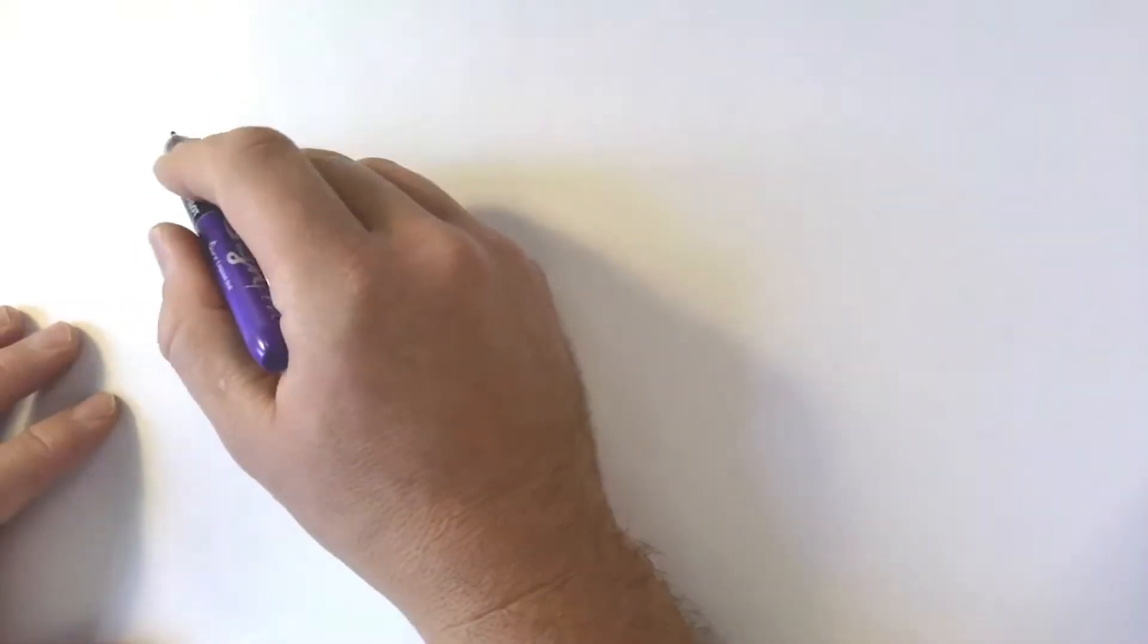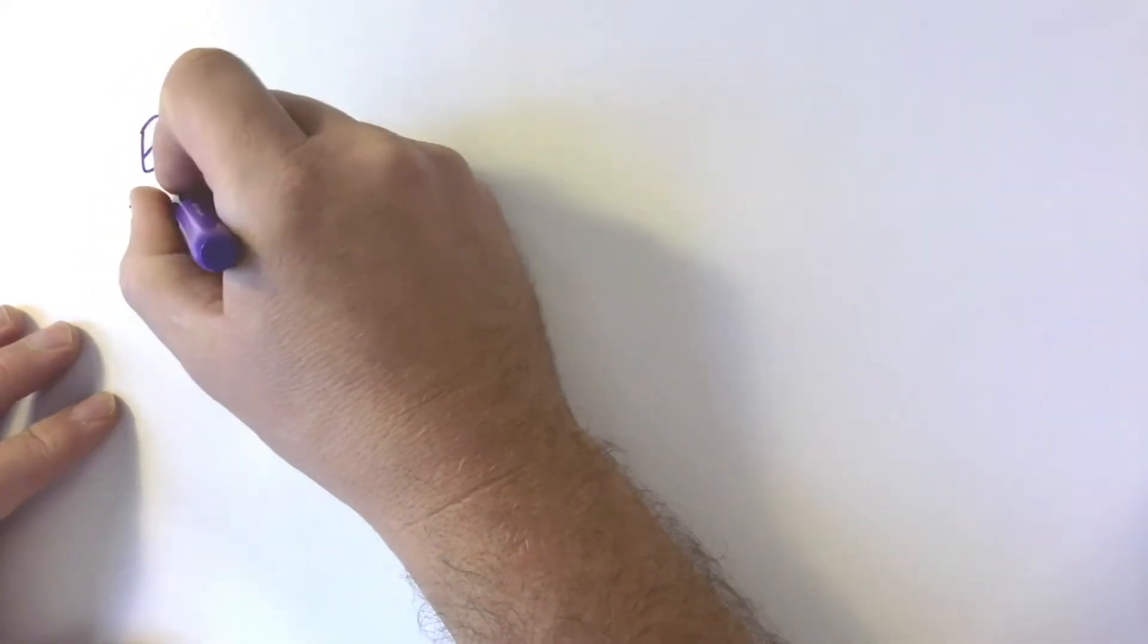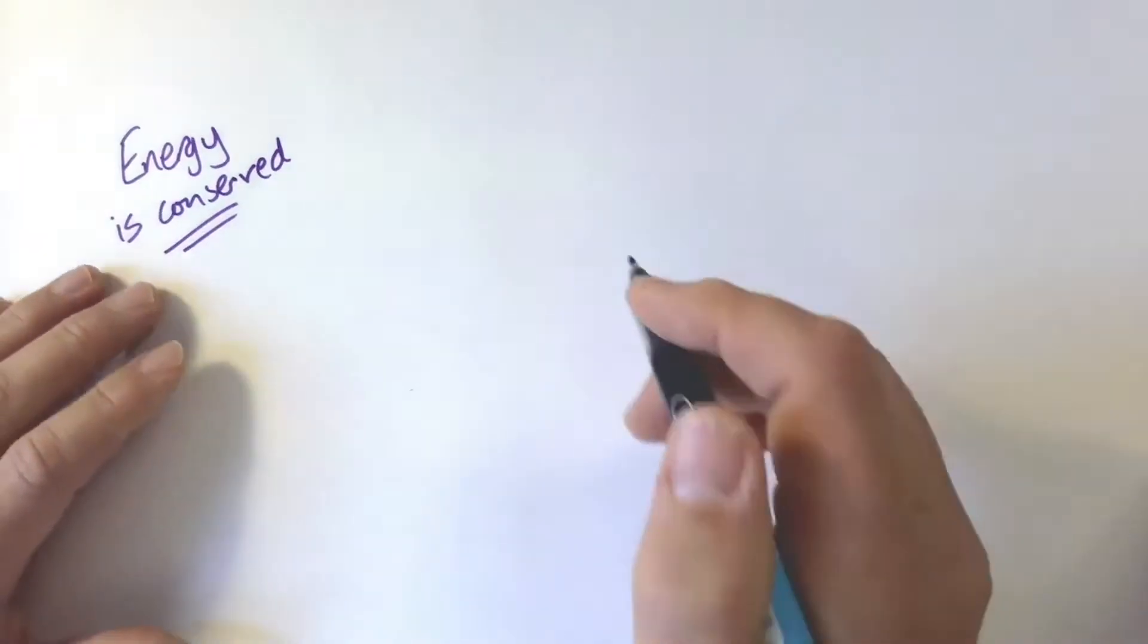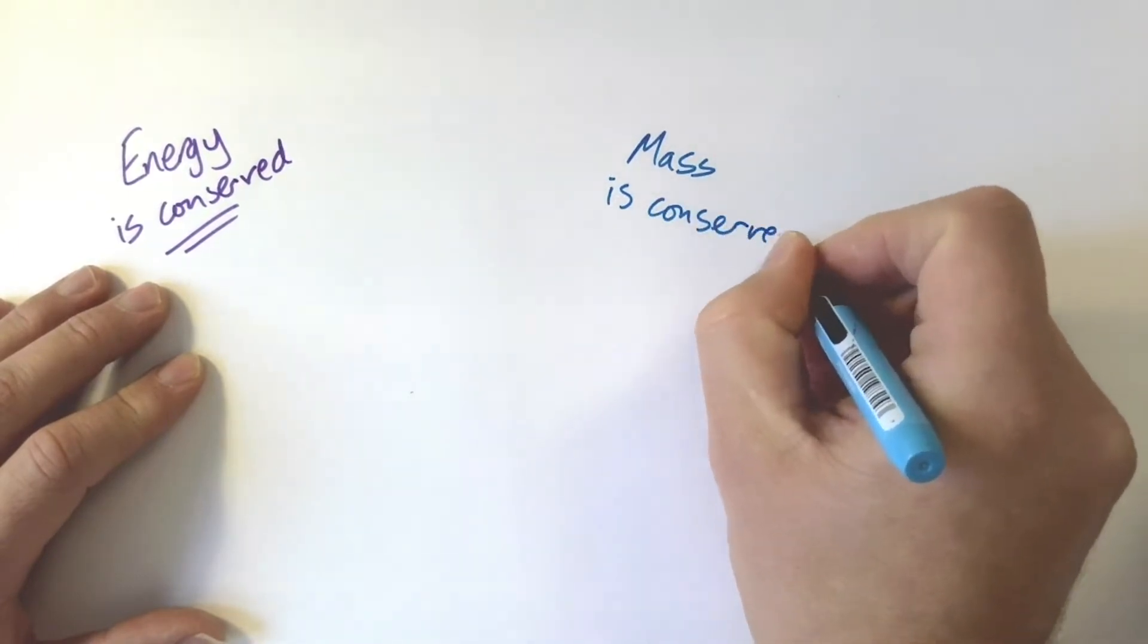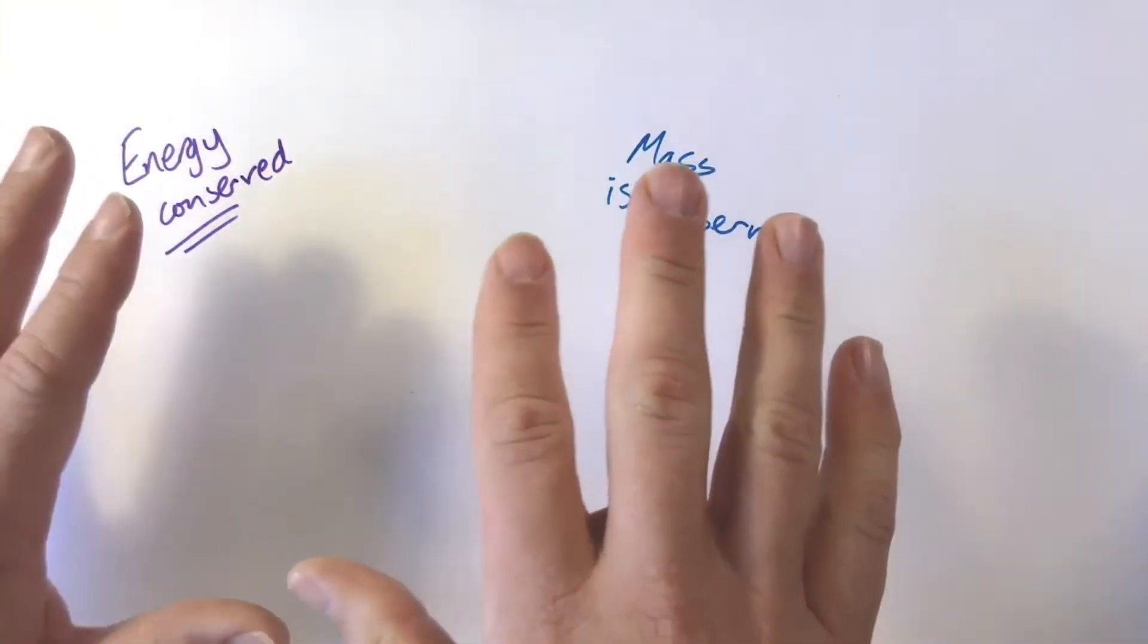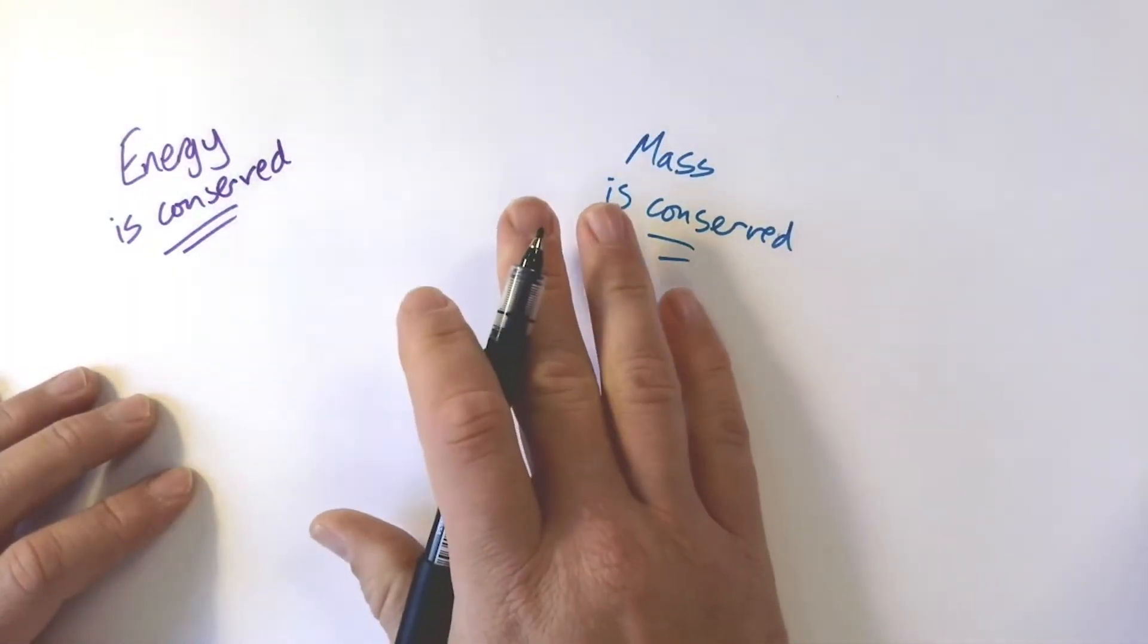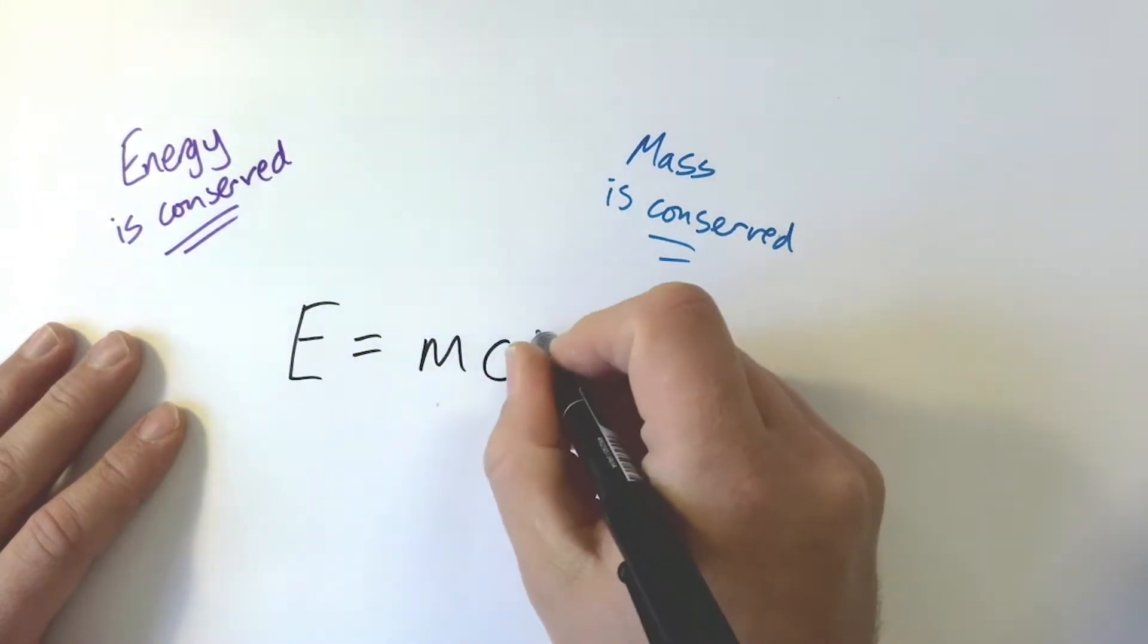So how can we get energy from a nuclear process? Well we probably need to start by talking about two things that we've told students before. So the first is that energy is conserved and we've hopefully drummed that into them, at the start and at the end the total amount of energy is always the same. Similarly in a chemistry lesson they'll have learned mass is conserved. Now this is also true in terms of a chemical equation, but we now need to let them know the full picture and the full picture is an equation that we don't need to teach them but most of them will have heard of anyway and that equation is E equals MC squared.